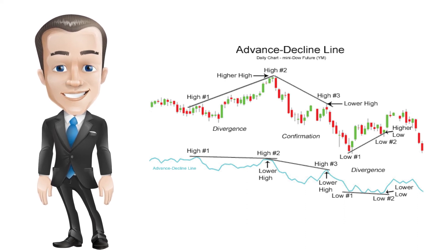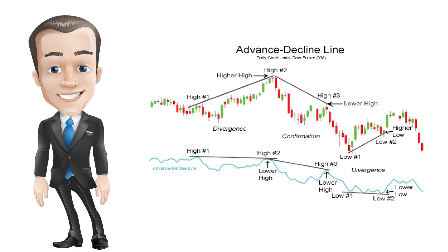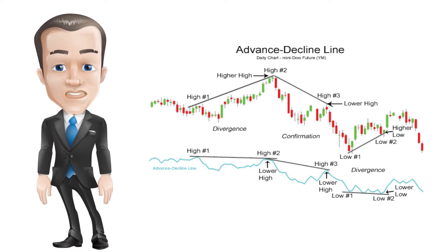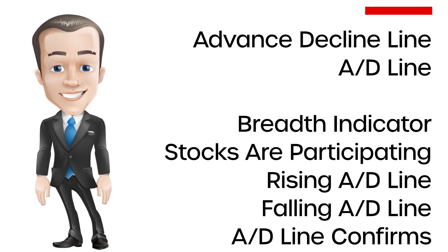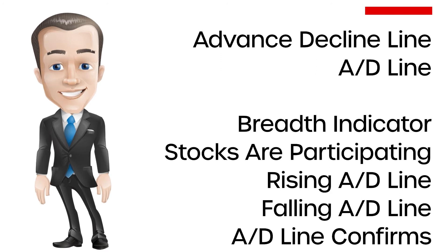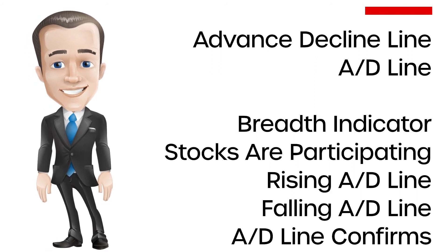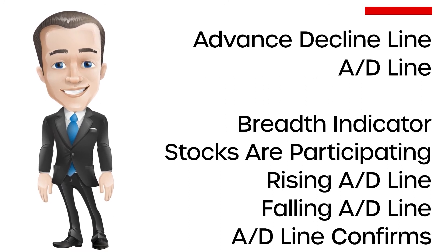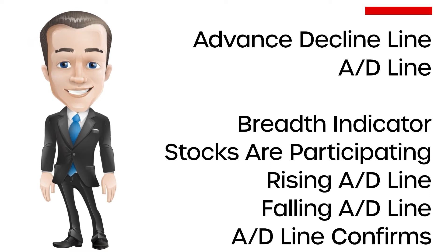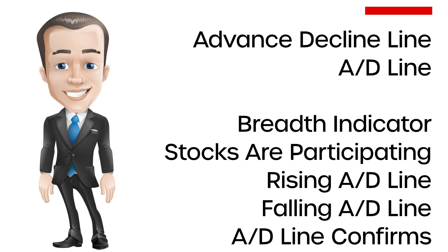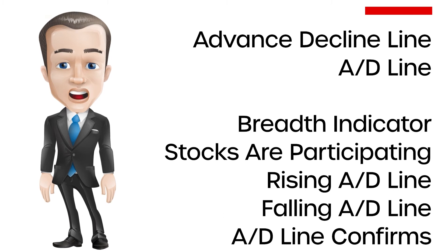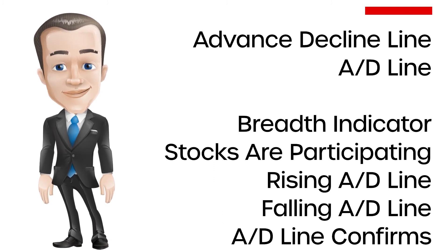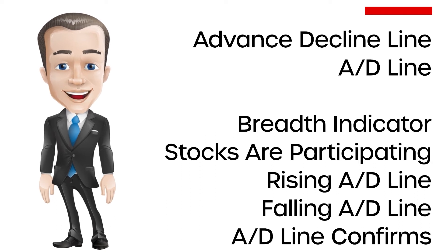In conclusion, the advance-decline line is a very effective tool to confirm price action in stocks and stock indexes, as well as signaling potential reversals or weak price moves. Key takeaways: when major indexes are rallying, a rising AD line confirms the uptrend showing strong participation. If major indexes are rallying but the AD line is falling, it shows fewer stocks are participating, meaning the index could be nearing the end of its rally. A falling AD line confirms a downtrend; a rising AD line during a declining market may signal the index is near the end of its decline.